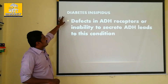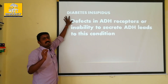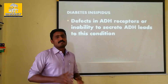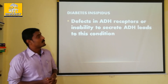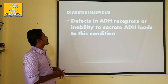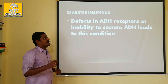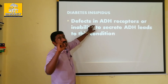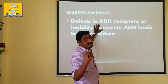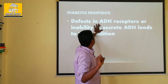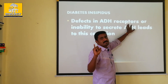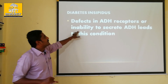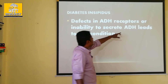Diabetes insipidus is the disease. The symptoms include defects in ADH receptors and inability to secrete ADH, leading to polyuria and polydipsia.